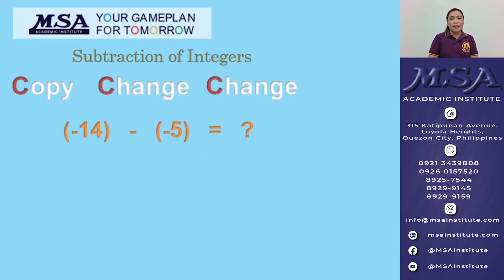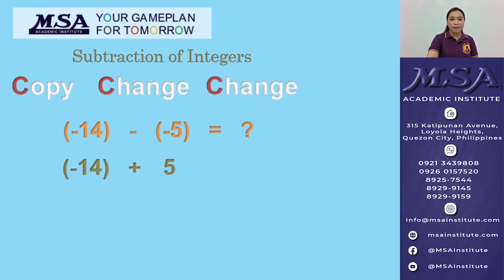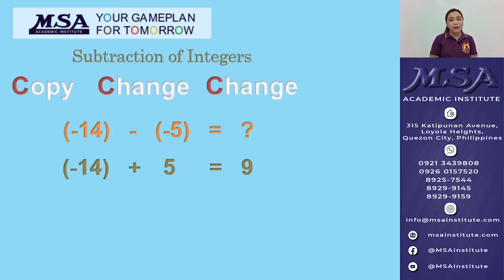Another one: negative 14 minus negative 5. Applying copy, change, change, we now have negative 14 plus 5. They are unlike signs, so remember the rule for adding unlike signs. 9 is the positive difference of their absolute values. And then copy the sign of the addend with the larger absolute value, so the final answer would be negative 9.